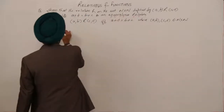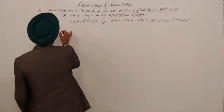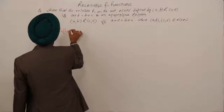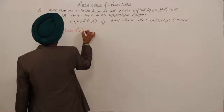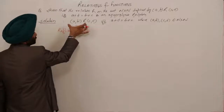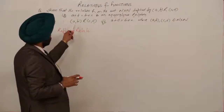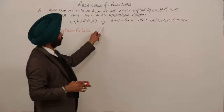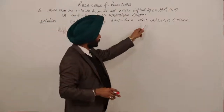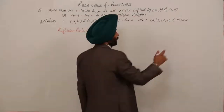Step 1 is for the reflexive part. I have written from the question: (a,b) R (c,d) if and only if a+d = b+c, where (a,b) and (c,d) belong to N×N.